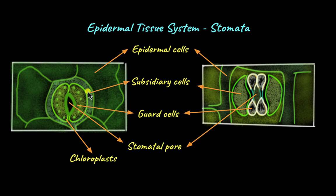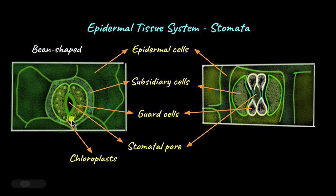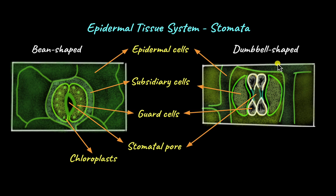Surrounding the guard cells are the subsidiary cells, which protect the guard cells and also act as reservoirs for ions and water. Based on the shape of the guard cells, stomata can be of two types. One is a bean-shaped stomata with bean-shaped guard cells, found in dicots. The other has dumbbell-shaped guard cells, shaped like a dumbbell used in the gym, and this type is seen in monocots.